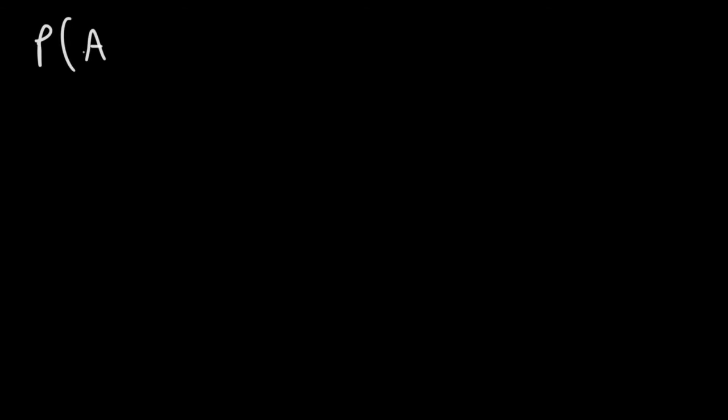In this lesson, we're going to focus on something called conditional probability. Perhaps you've seen something like this: P of A with a bar next to it and then a B. This represents the probability that event A will occur given that event B has already occurred.